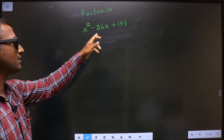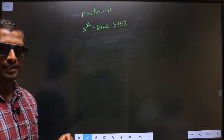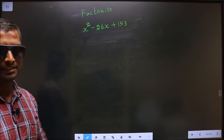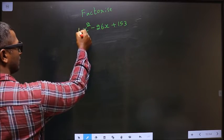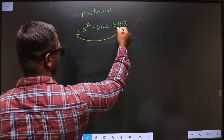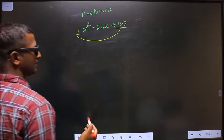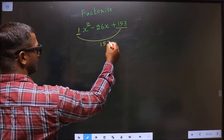Factorize x squared minus 26x plus 153. To factorize any quadratic equation, step 1: whatever is the x squared coefficient, you should multiply it to the constant, that is plus 153 in this case. So 1 into 153 is 153.